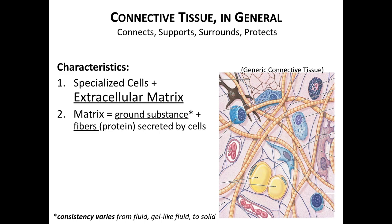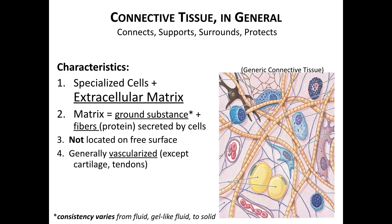Fibers refer to protein strands and will mainly consist of collagen and elastin, which we'll discuss briefly. Connective tissue is all internal, so you'll never find it located on the free surface — it will not be exposed to any external environment, although it will be surrounding internal organs inside the body. Finally, connective tissue is generally well vascularized, meaning it contains a lot of blood vessels. Cartilage and tendons are the two major exceptions, and we'll see this is associated with their poor healing ability.